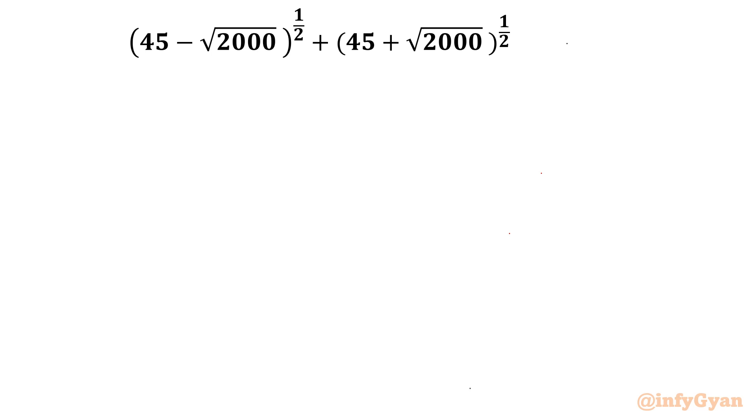We will solve this by algebraic identities. Let me consider the first square root as a and the second one as b. Now let us write the value of a and b. Overall we have to find out a plus b. One more thing, if you see square root of this much, obviously a must be positive and b must be positive, both numbers must be positive for real solution. So a is √(45 - √2000) and b is √(45 + √2000).